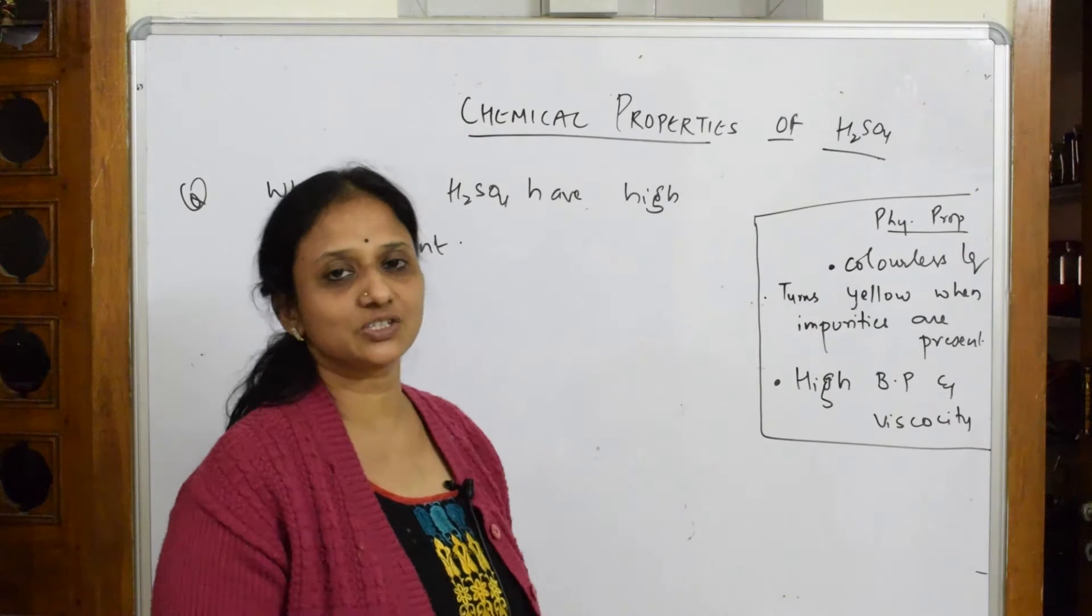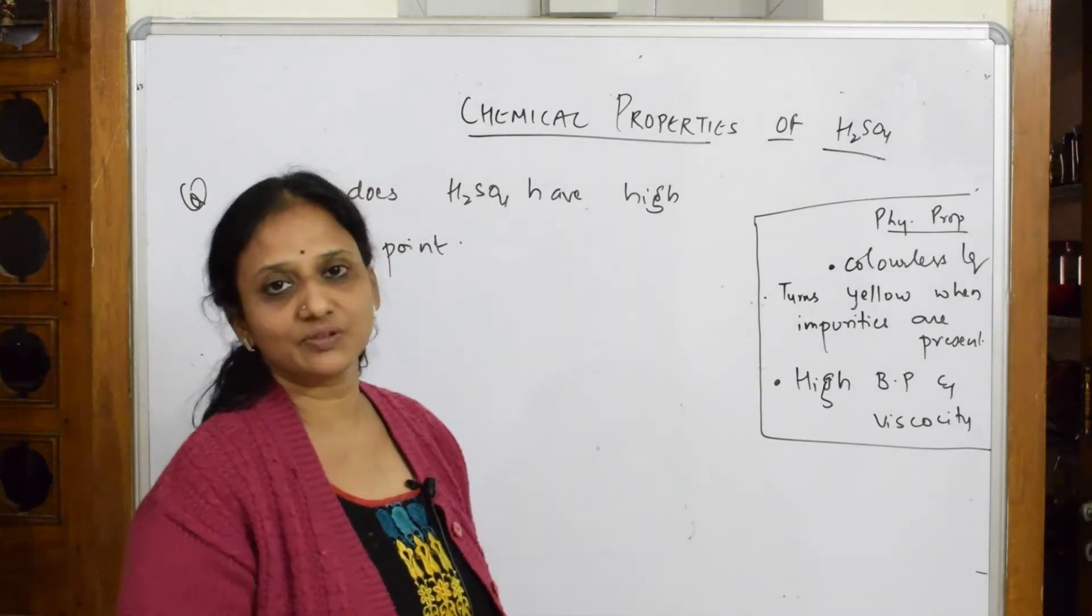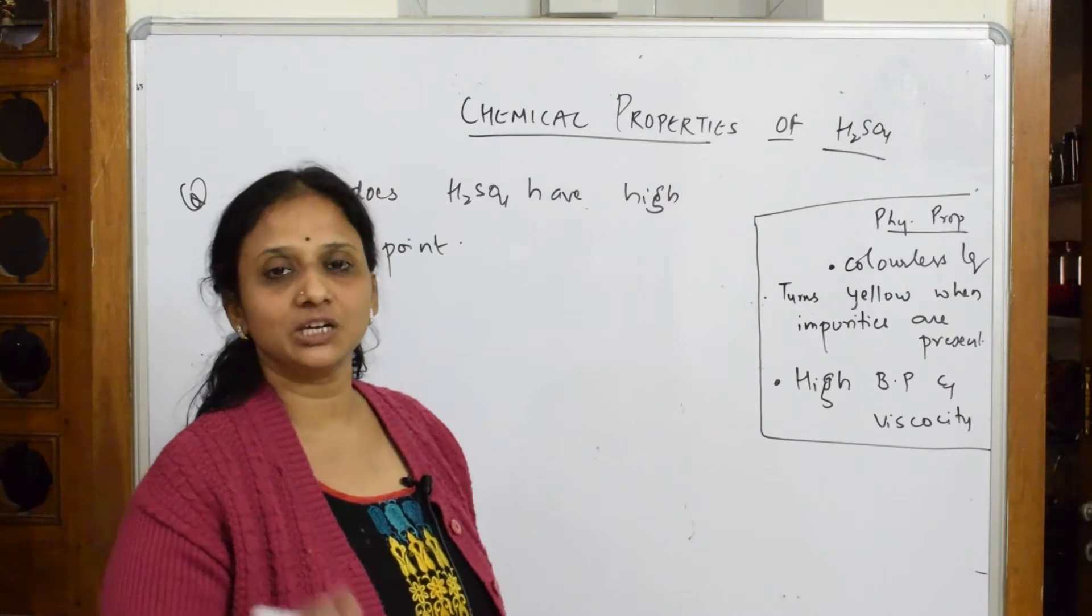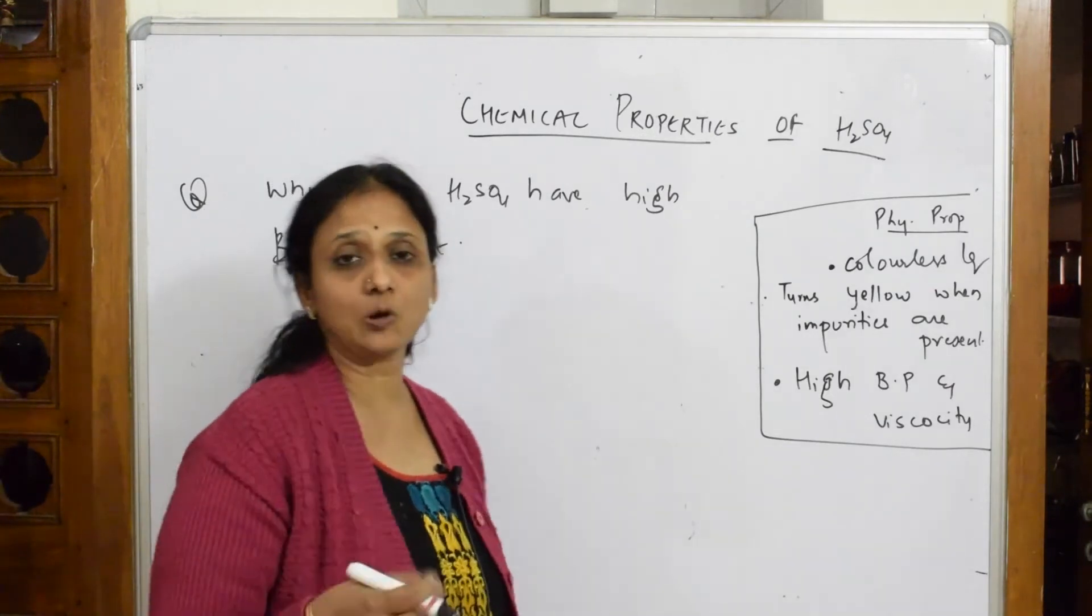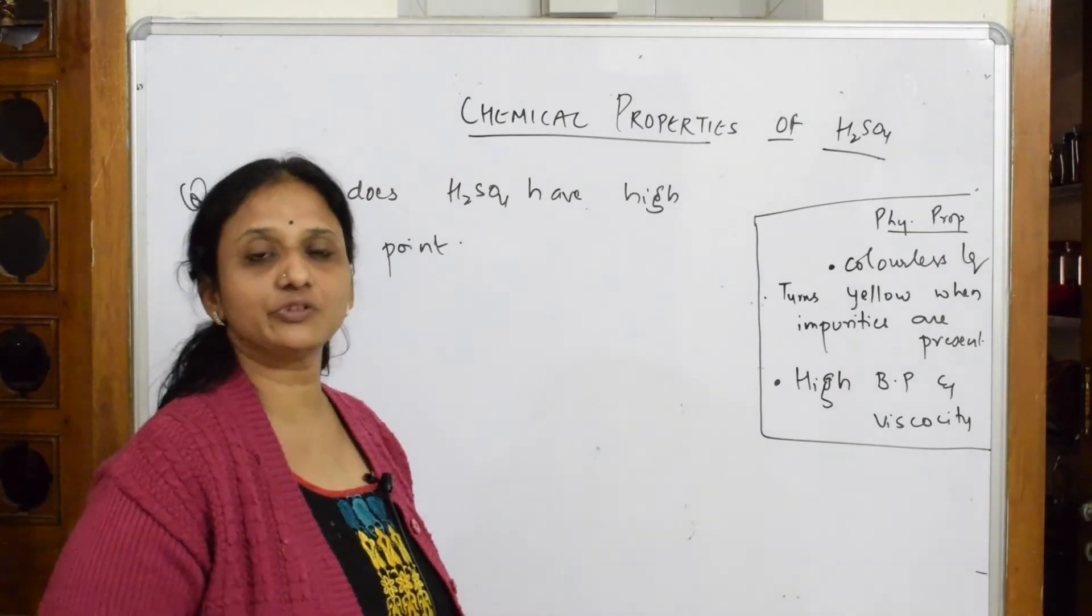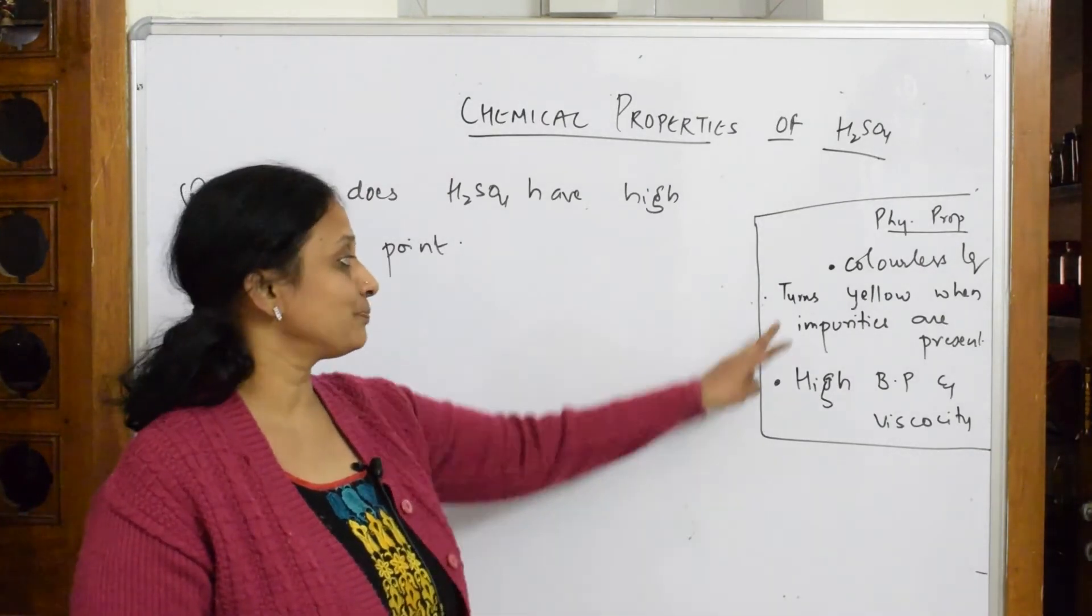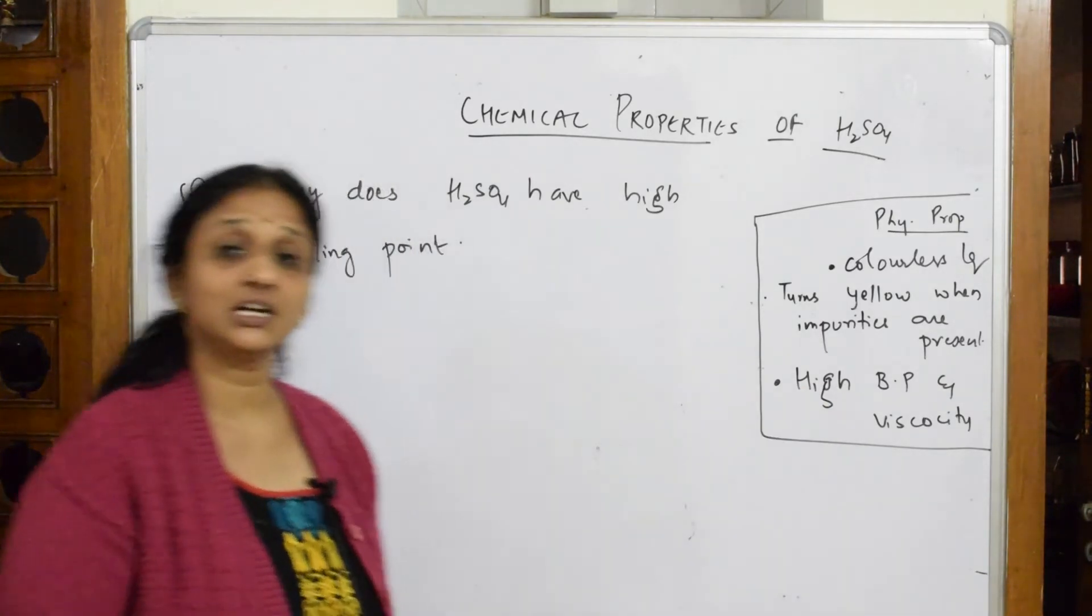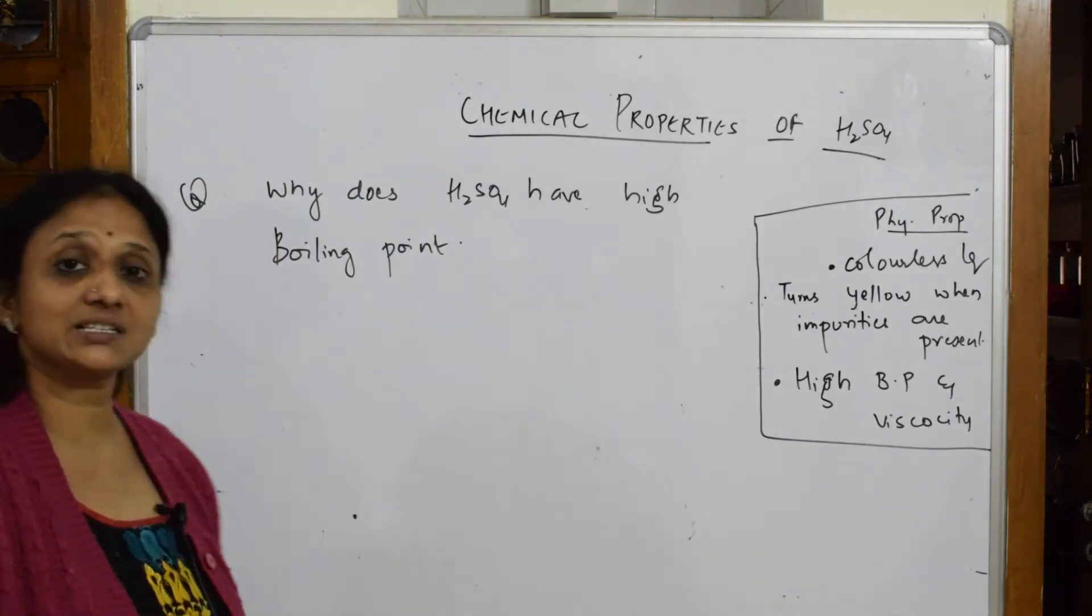Just note it in your book. It's a colorless liquid which we have seen in the lab. When you retain the sulfuric acid with you, keep adding or putting different droppers in the sulfuric acid bottle, you find that sulfuric acid changes from colorless to a yellowish color. It has high boiling point and high viscosity. Now the question is, why does sulfuric acid have high boiling point?